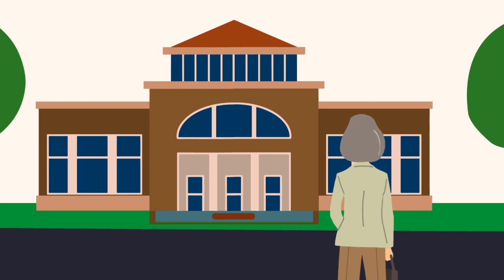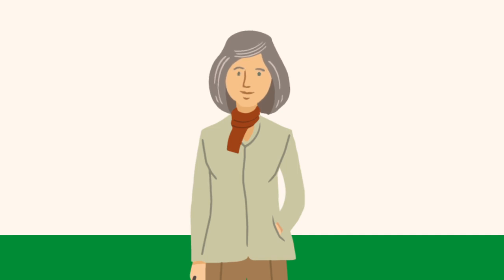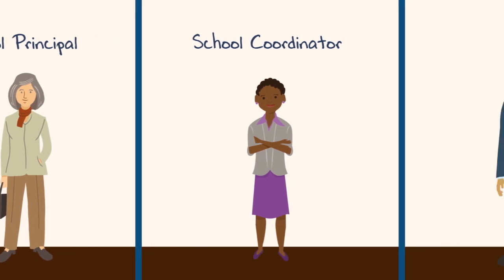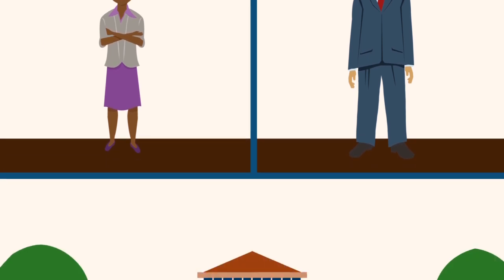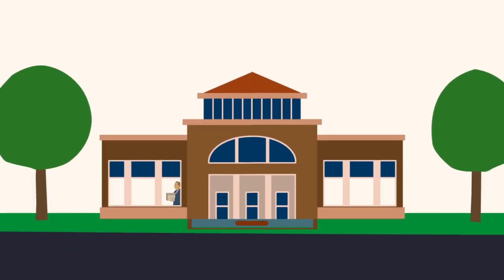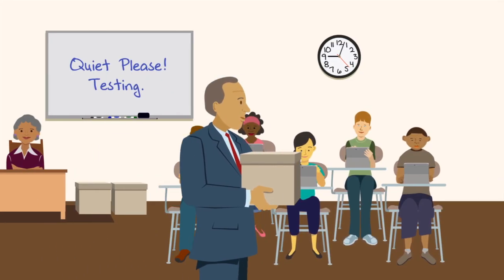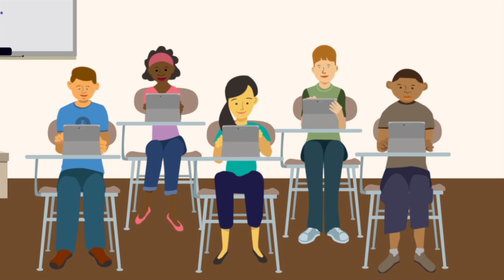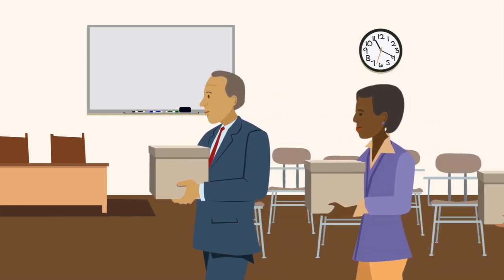Local schools are key in reaching that goal. Each school principal will designate a school coordinator, who will work with a field coordinator from the NAEP assessment team throughout the process. The assessment team arrives early on test day. They will bring all necessary testing materials to the school and administer the test to the students. When testing is complete, assessment team members will remove the testing material and submit all student answers for scoring.